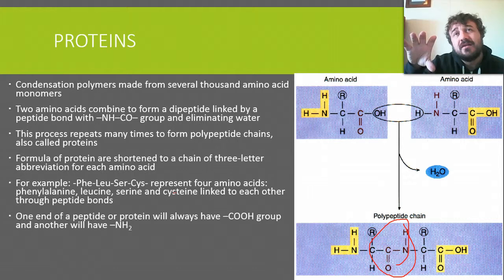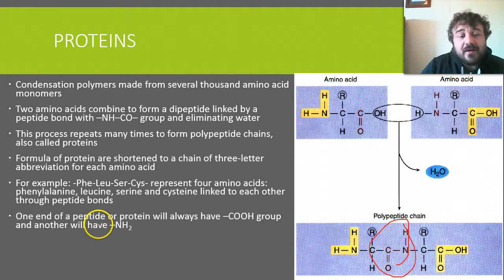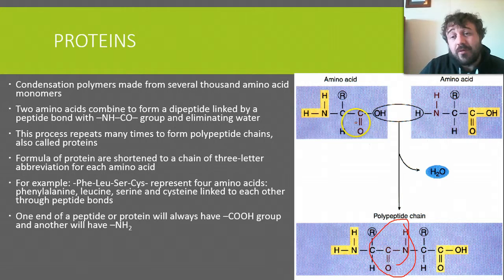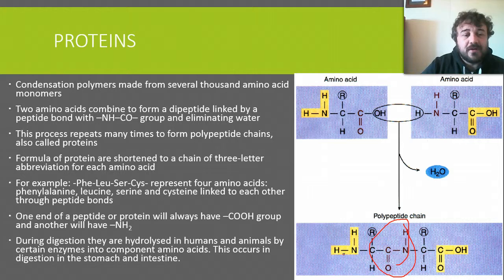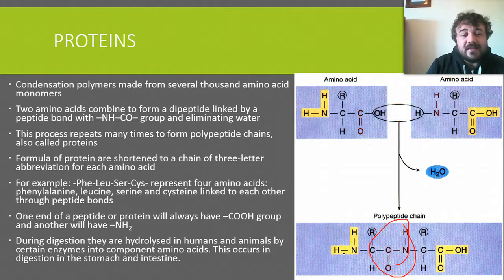Proteins are the direct product of DNA — the direct product of genes. The only thing genes do is make proteins. One end of a peptide or protein will always have the carboxylic acid group, and the other end will always have the amino group. When we eat them, we hydrolyze them using the hydrochloric acid in our stomach as well as water, which hydrolyzes them into amino acids so we can absorb them.